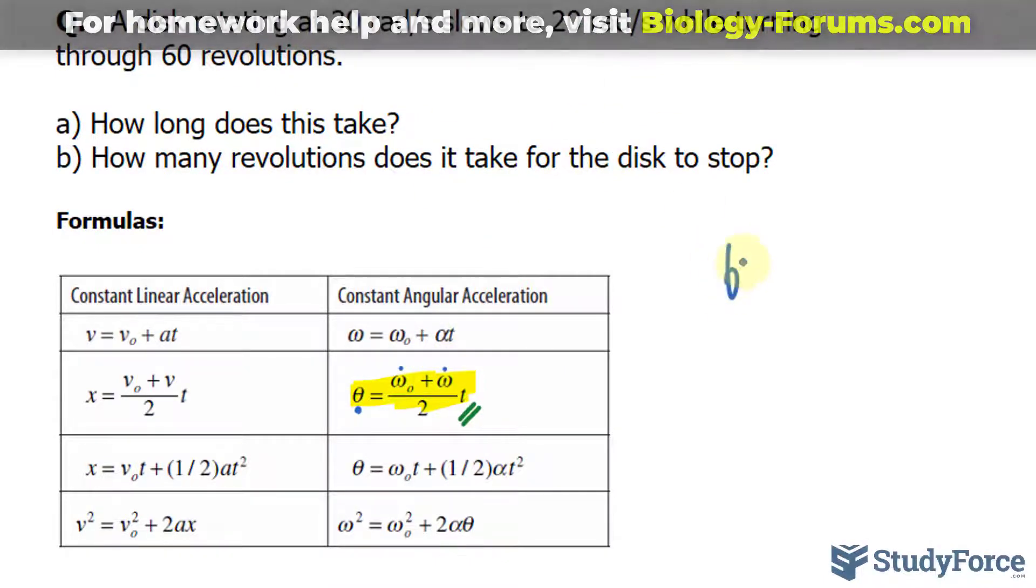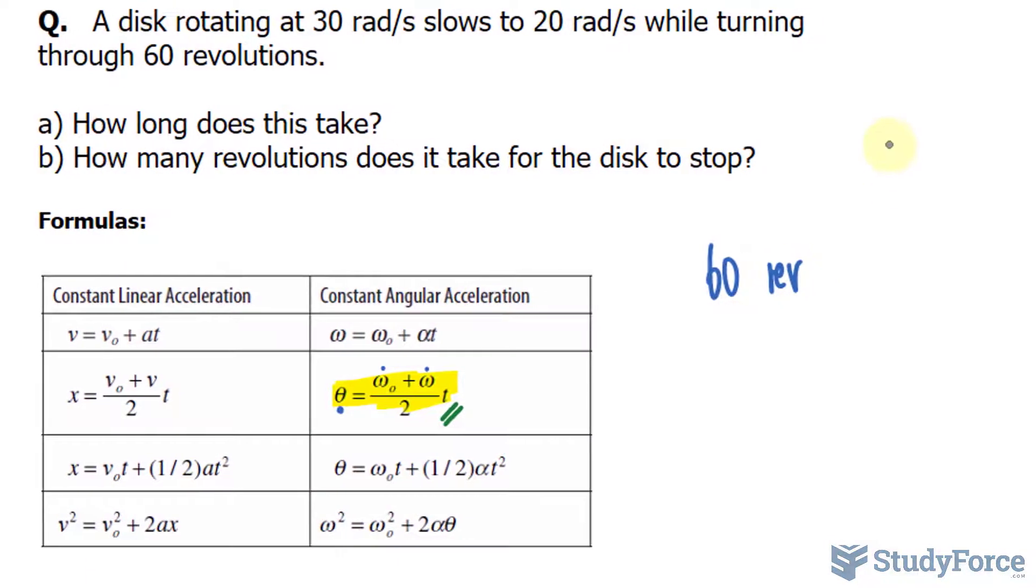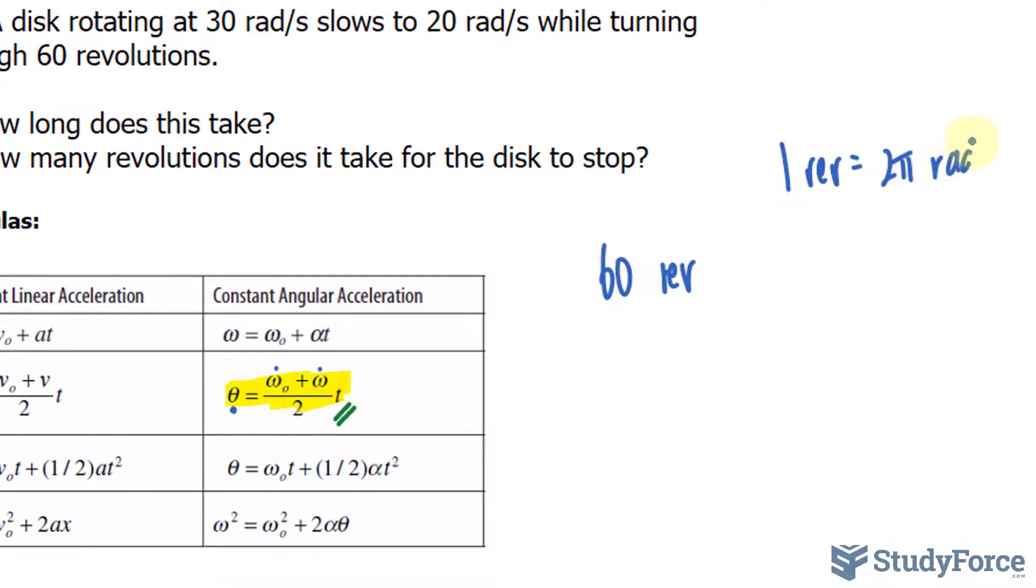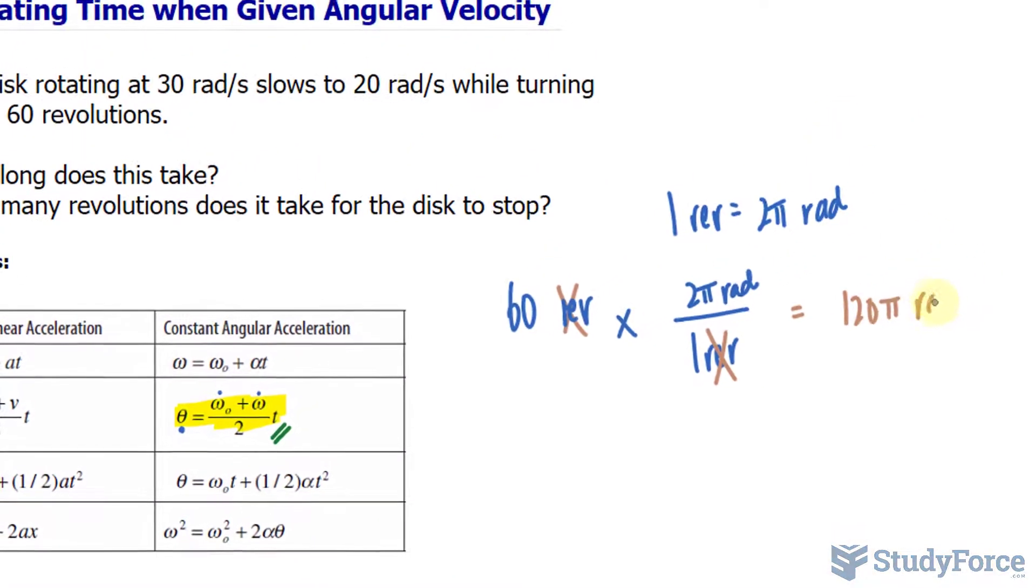So let's go ahead and convert 60 revolutions into radians. Now for every one revolution, you have 2 pi radians. So using this as a conversion ratio, I'll multiply 60 revolutions by one rev at the bottom and 2 pi radians at the top. Notice that the revolution unit will cancel out, leaving us with 60 times 2 pi, which is 120 pi radians.